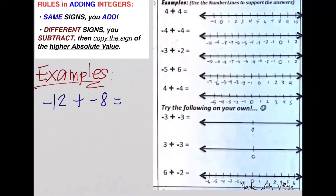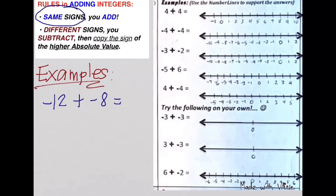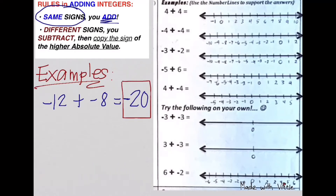The first example is negative 12 plus negative 8. You have to ask yourself: are they of the same signs? Of course, because they're both negative. So what are we going to do? We're going to add them. Negative 12 plus negative 8 is negative 20. You copy the same sign because both of them are negative.